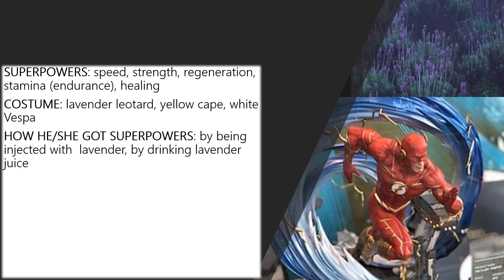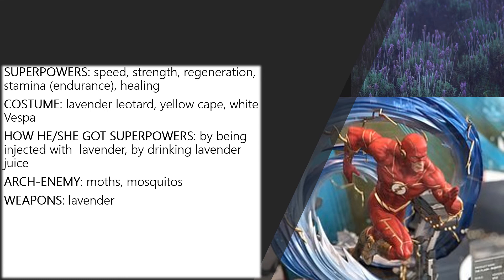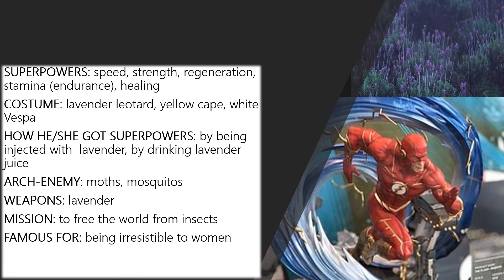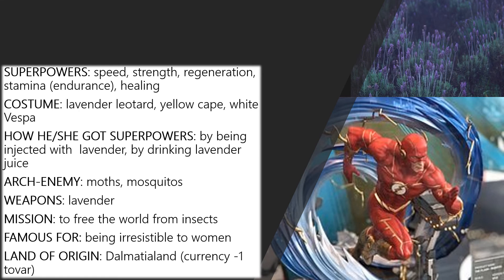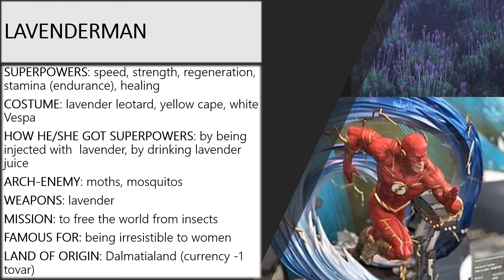How did he get his superpowers? Well, he was injected with lavender when he was sleeping one day, and when he wants to get some more strength, he drinks lavender juice. His archenemy are moths and mosquitoes, and his weapon is what else but lavender. His mission is to free the world from insects, mostly mosquitoes and moths. He is famous for being irresistible to women, and his land of origin is Dalmatia Land. It's interesting that in Dalmatia Land there is a special currency — it is one tovar, and it means donkey. So who is this superhero? His name is Lavender Man, our own Croatian superhero.